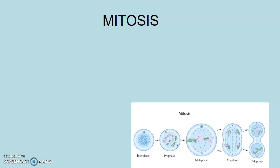Okay, everybody. Welcome back. This is Mr. Adolph, and we are going to continue on with our cell division section here. So in the last video clip, I talked a little bit about the difference between a somatic cell and a gamete in terms of the number of chromosomes they have. Somatic cells go through a process called mitosis, and we're going to talk about that in detail today.